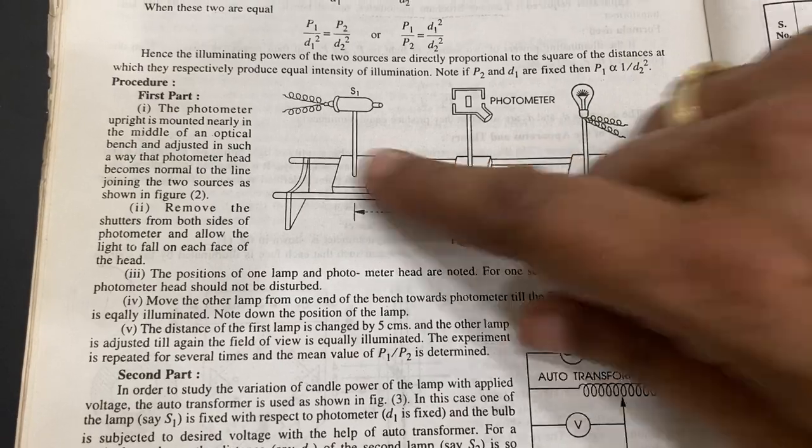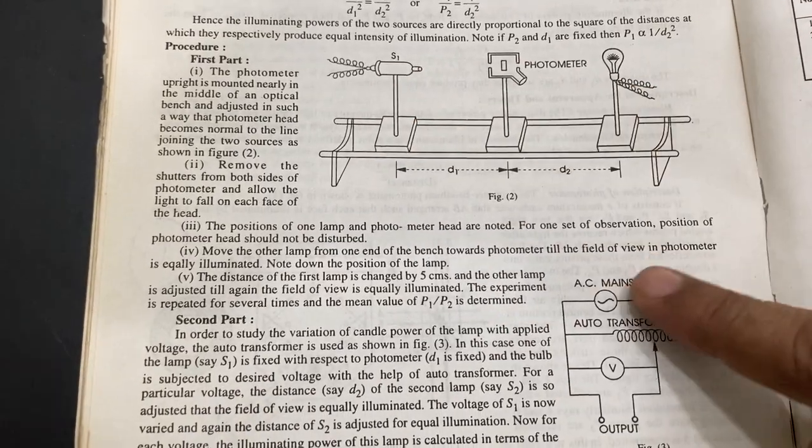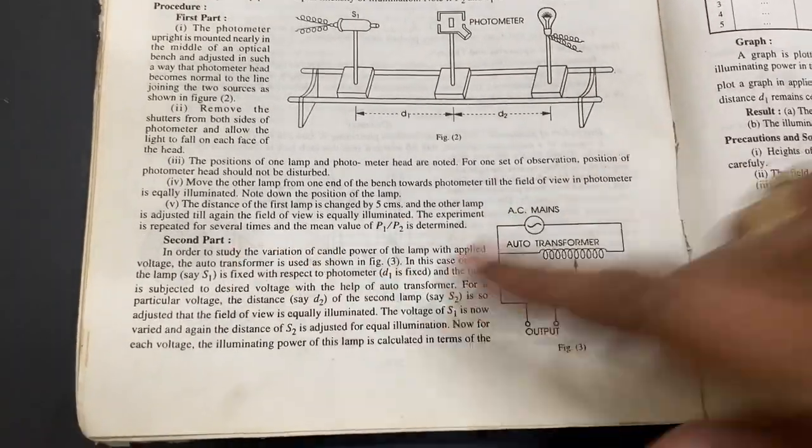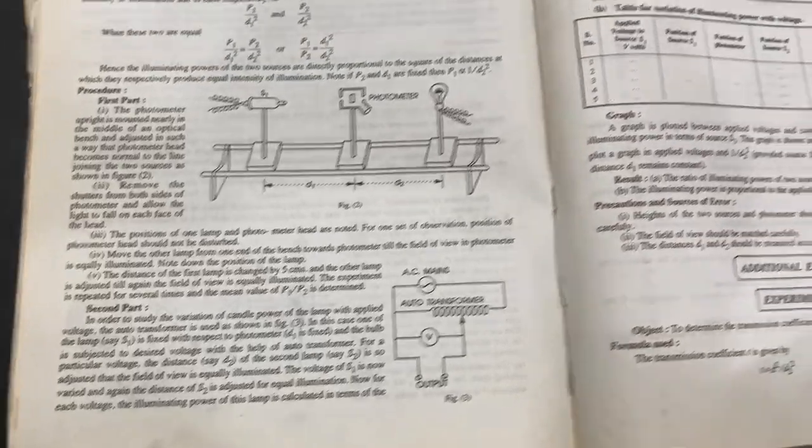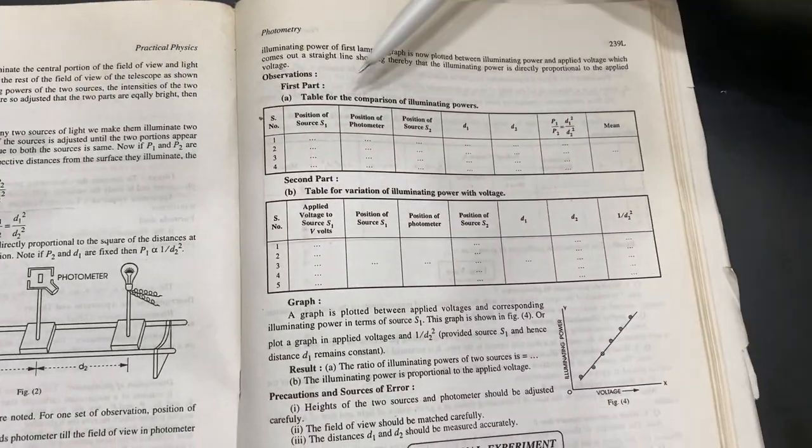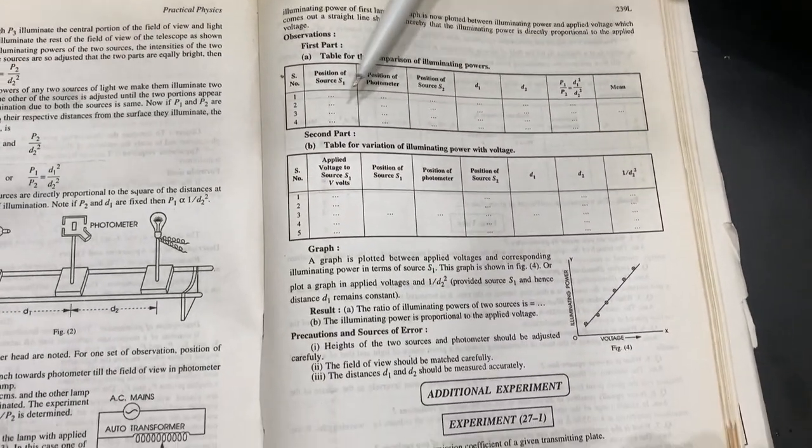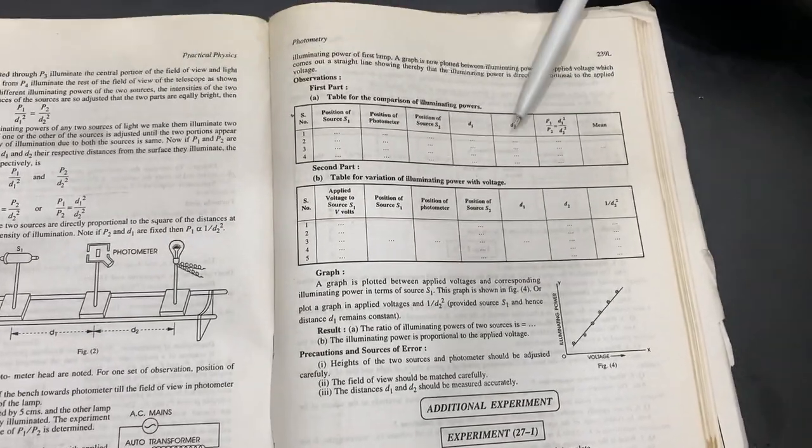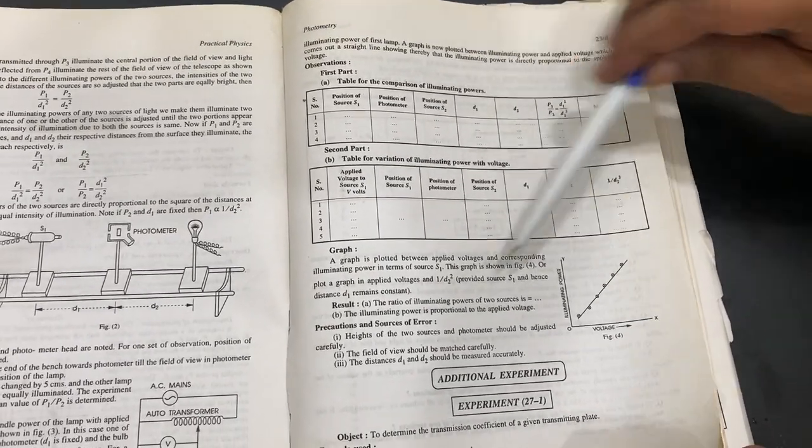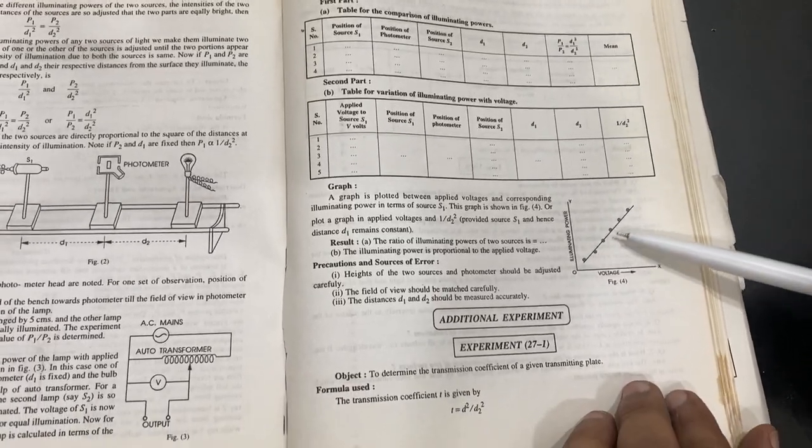Now this is variable lights, two sources, Lummer-Brodhun photometer center part, second part, and then the tables are there visible. You can tabulate how much is the source one, source two distance, and the illumination diameter. And then you can plot the distance and then graph.